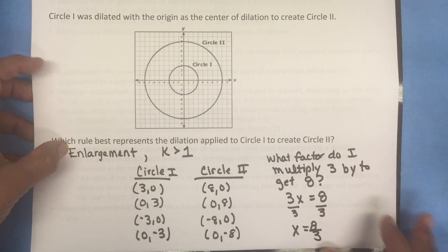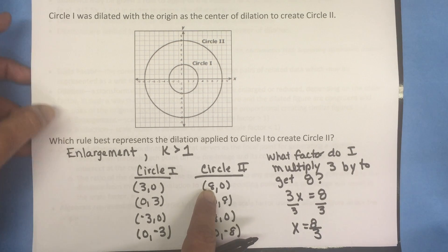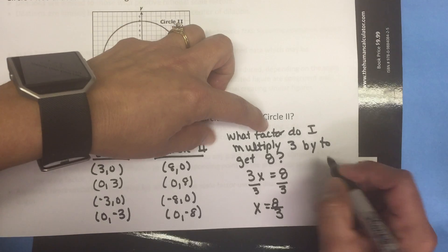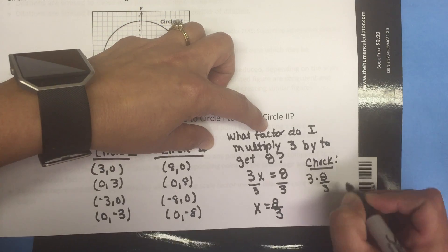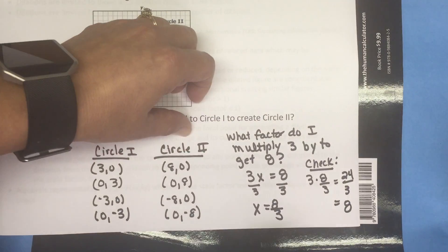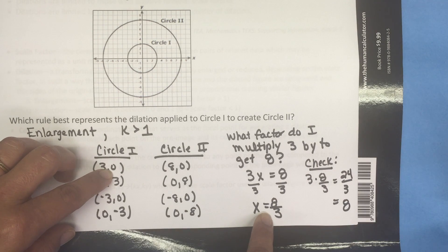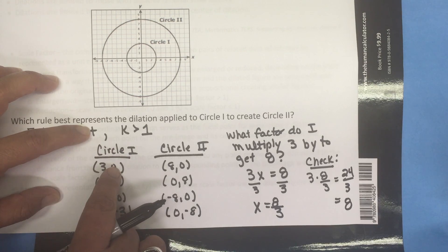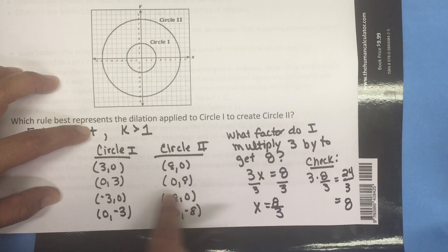So let's check. This is telling me that if I multiply 3 times 8 thirds that's going to give me the answer of 8. Let's verify that. 3 times 8 thirds gives me 24 over 3 which does equal 8. Now what if I multiply 0 times 8 thirds? Well I know that 0 times anything is 0. So if I multiply the coordinates of circle 1 by 8 thirds that's going to give me the coordinates of circle 2 and we could check each coordinate to see that it is correct.